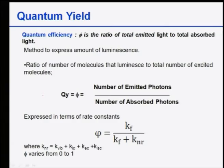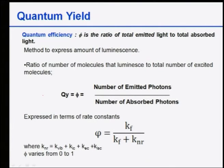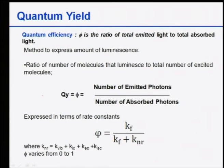Now quantum yield: quantum efficiency is defined as the ratio of total emitted light to total absorbed light — that is, the number of emitted photons divided by the number of absorbed photons. It can be expressed in terms of rate constants as: Φ = k_r / (k_r + k_nr), where k_nr includes vibrational relaxation, inter-system crossing, and other non-radiative rate constants. Φ normally varies from 0 to 1.